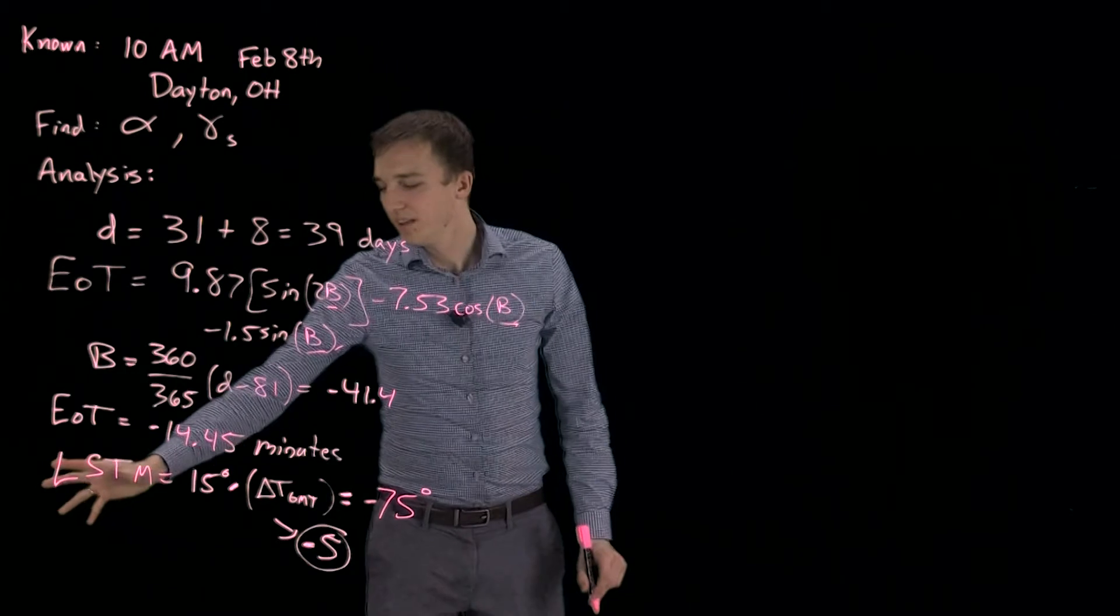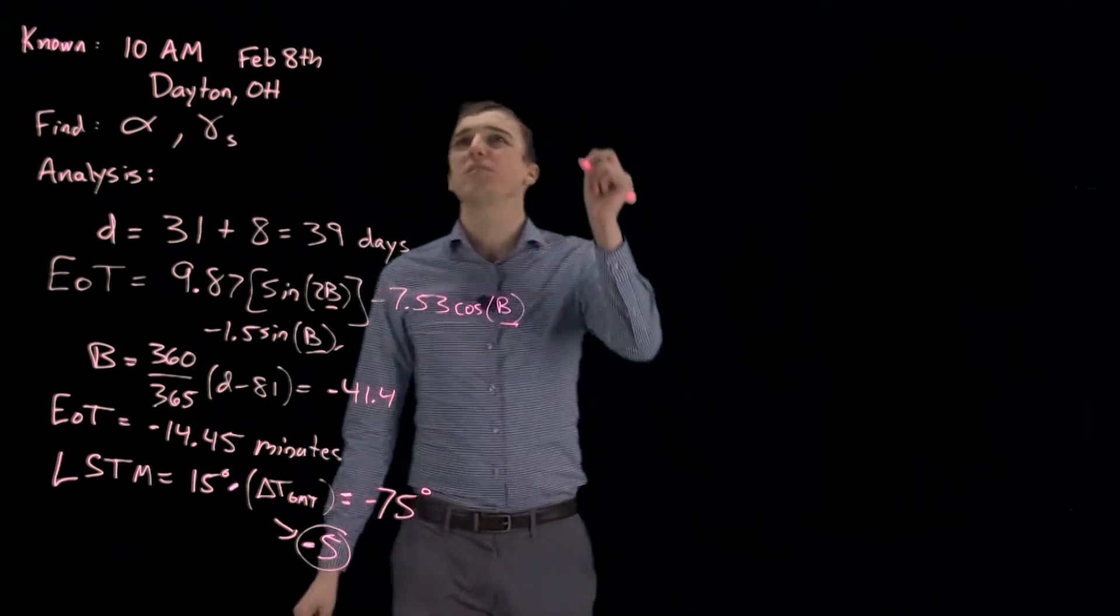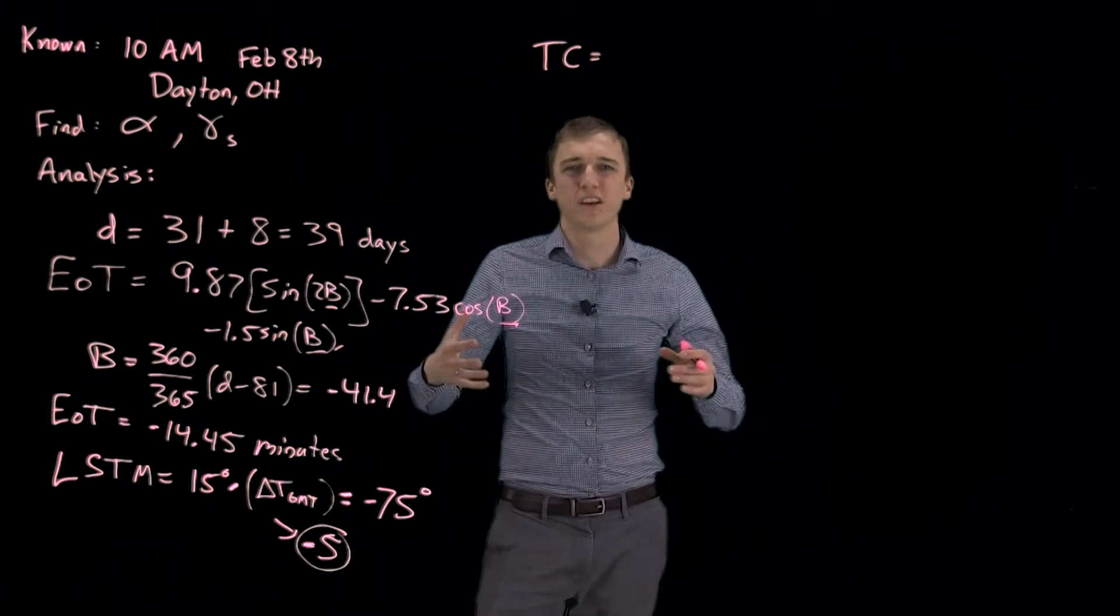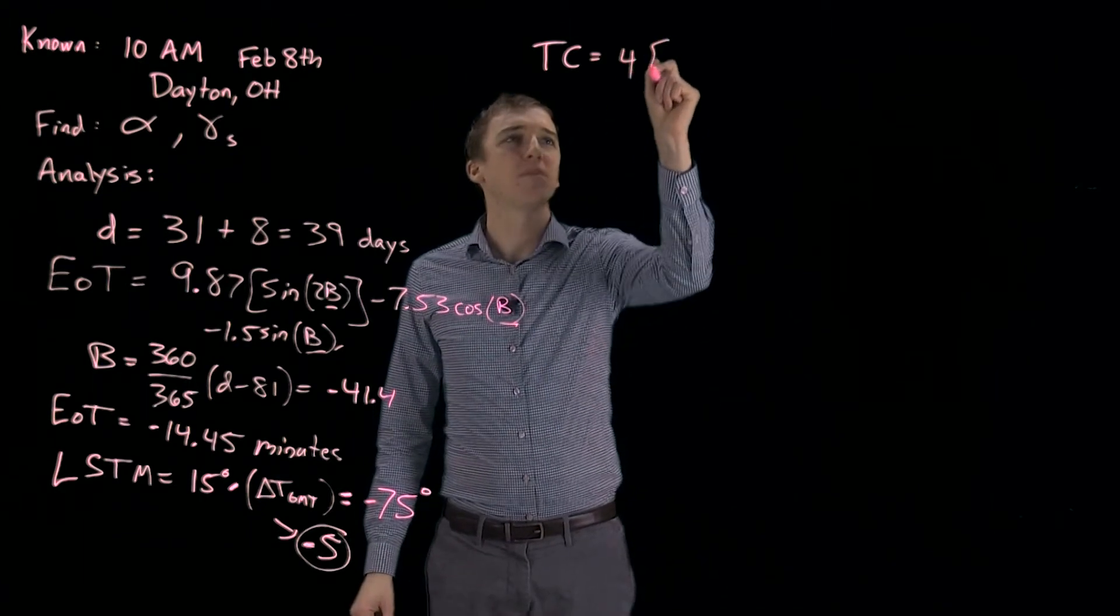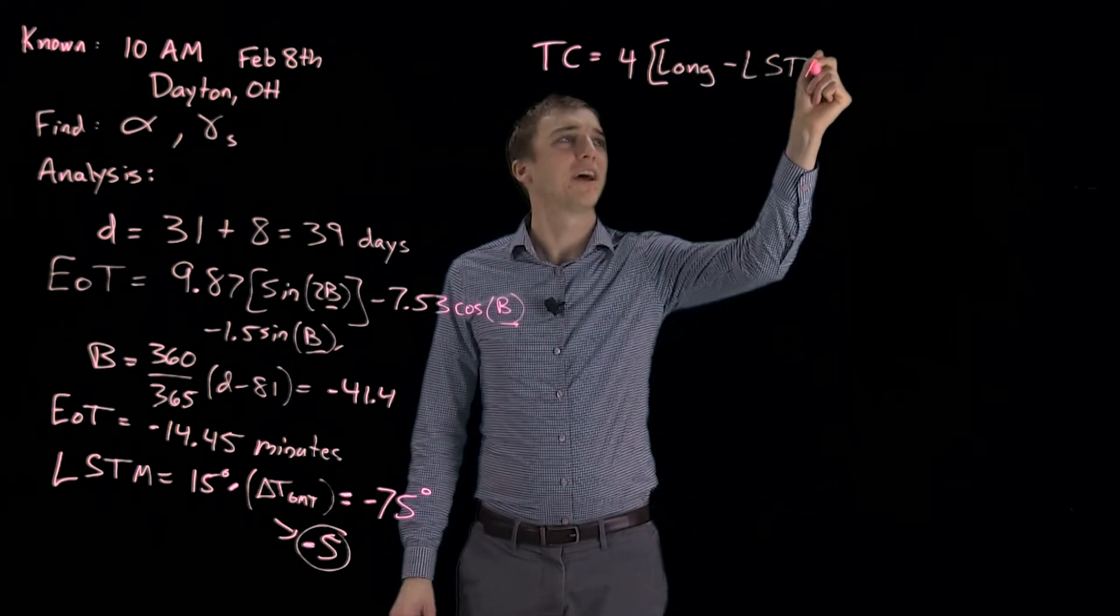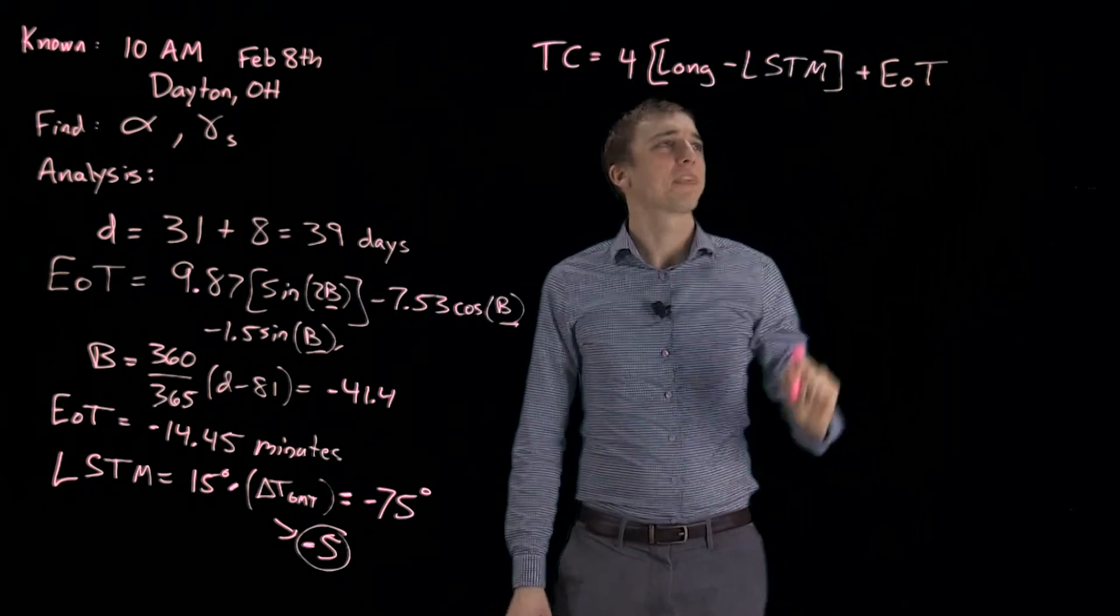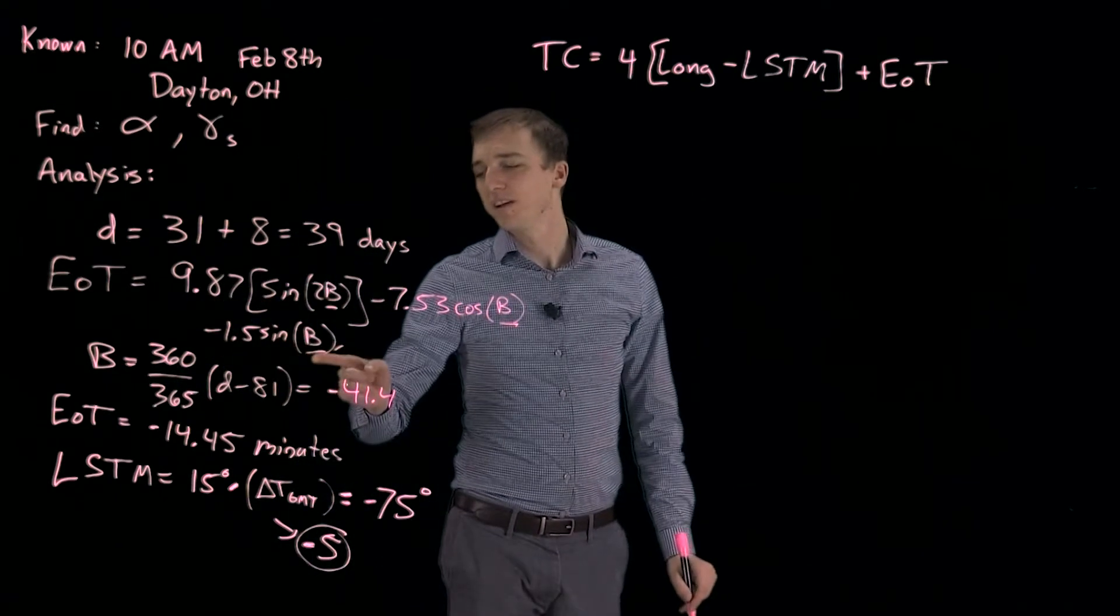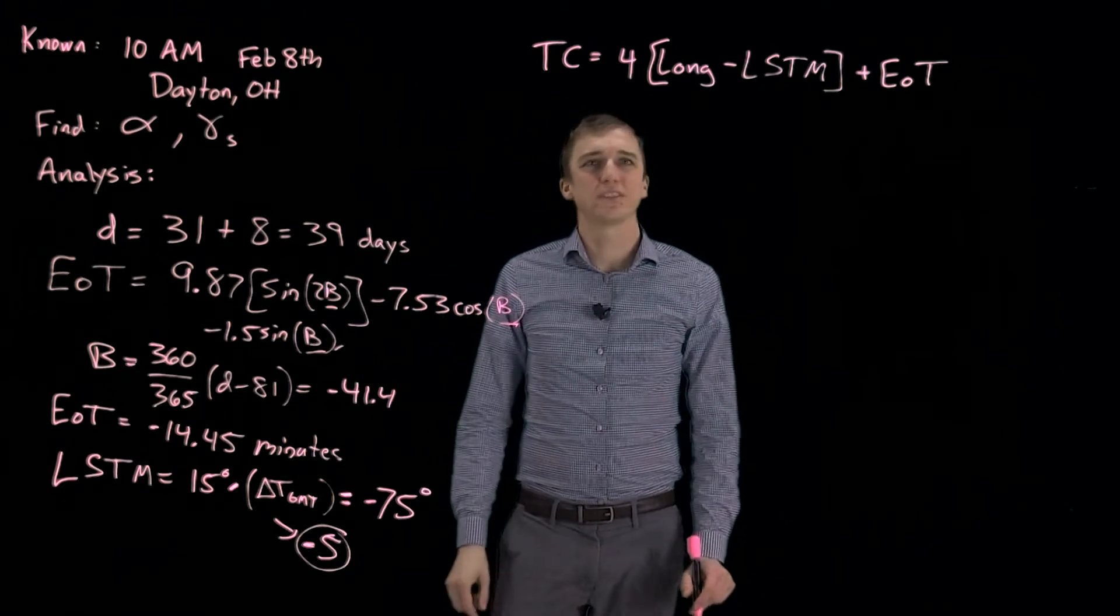So this is the standard longitude that we reference our clocks to. So now, we will find the time correction equation. This accounts for, like I mentioned before, mankind changes to time. So we multiply 4 by our current longitude, and subtract that from our LSTM, or our standard meridian for time, for our local time, and add that to, now, the natural variation of time, accounting for variations in the Earth's orbit around the sun and in its rotations.